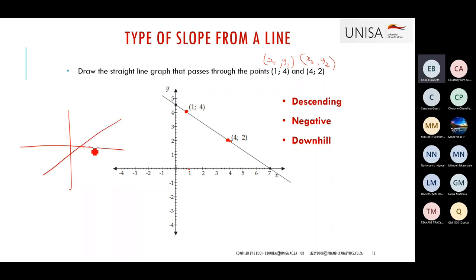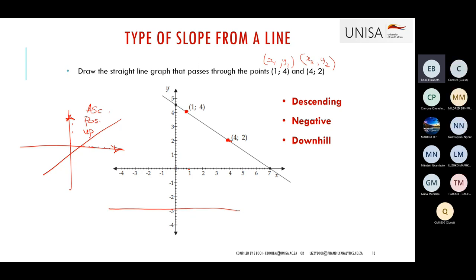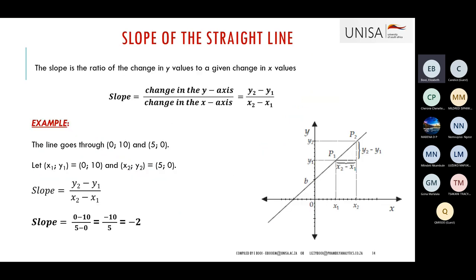If x values increase and y values also increase, it is an ascending, positive, or upward slope. You also get constant slopes where the value of y stays constant when x changes, or a graph where x stays constant and y changes — in that case, the slope equals zero.